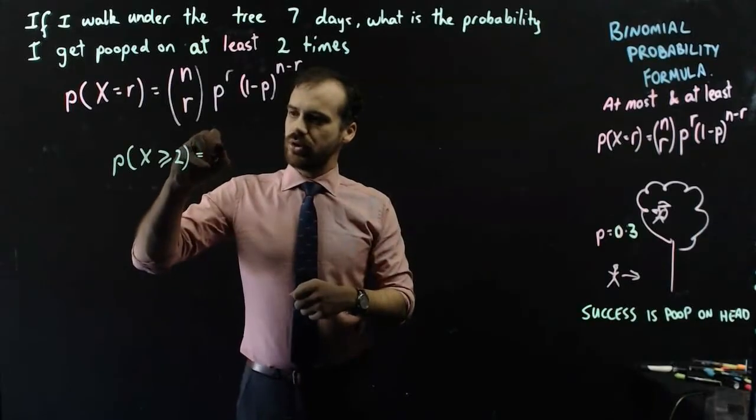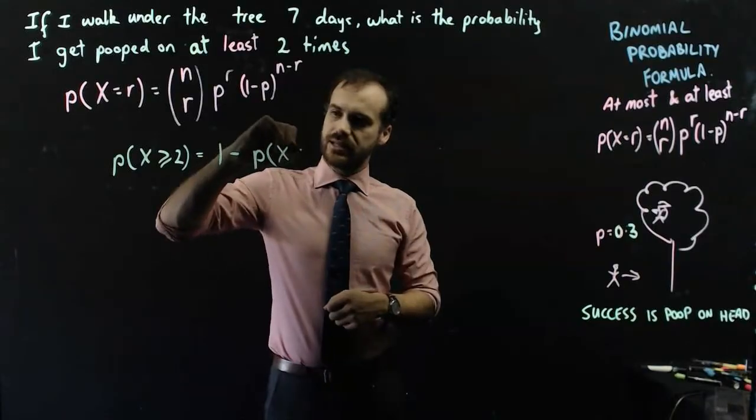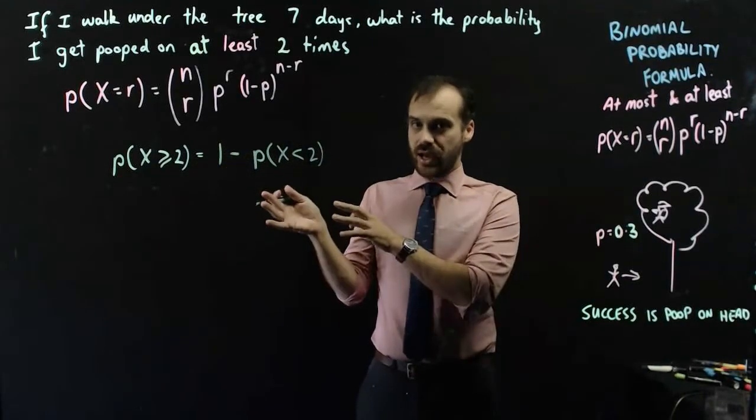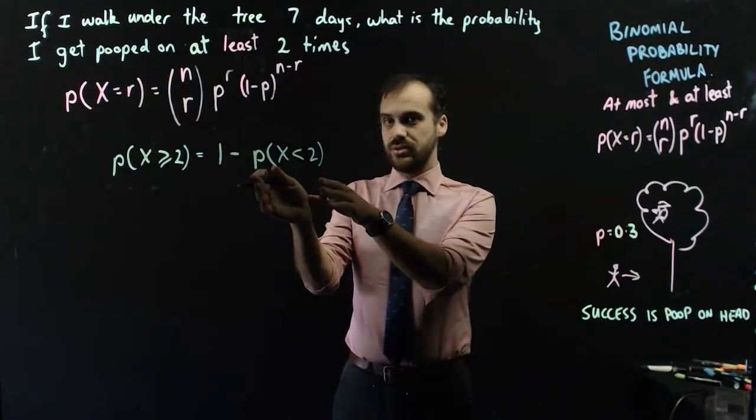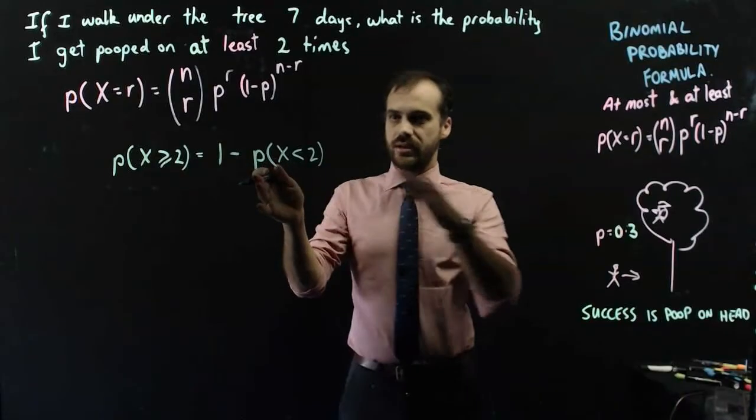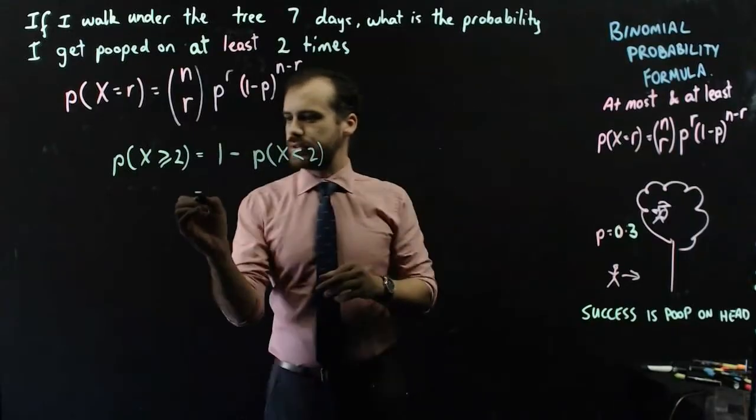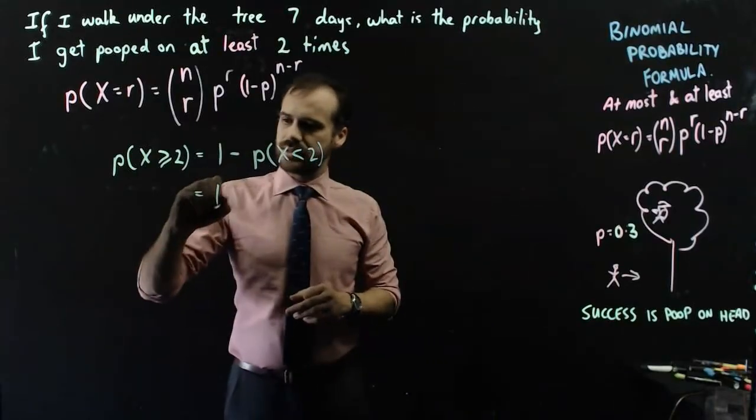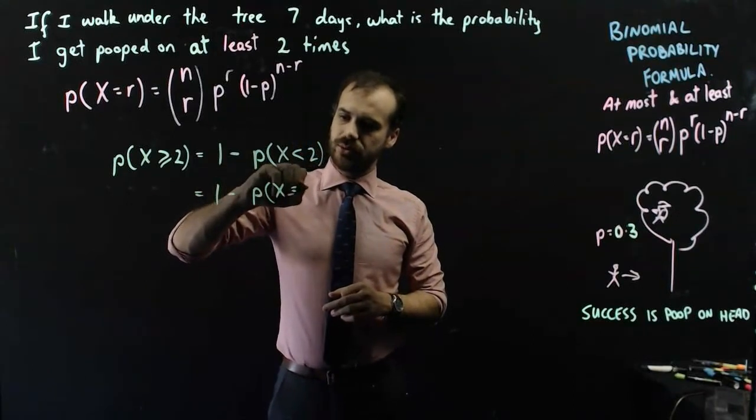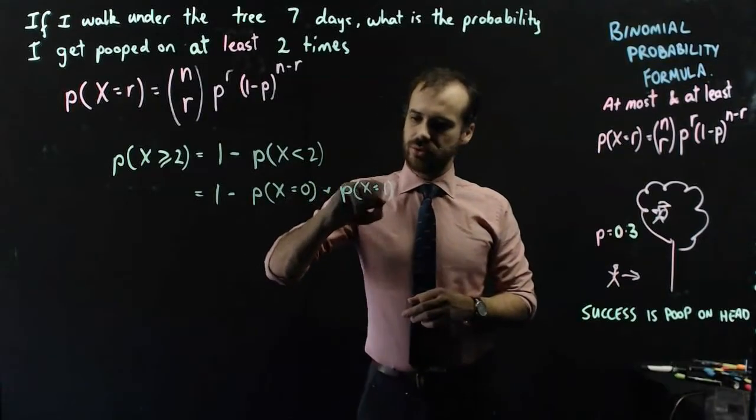Do 1 minus the probability that x is less than 2. Because if I find that, if I find the probability that x is less than 2, that I get pooped on less than twice, then subtract it from 1, I'll have the complement. So this is equal to 1 minus the probability that x equals 0 plus probability that x equals 1.